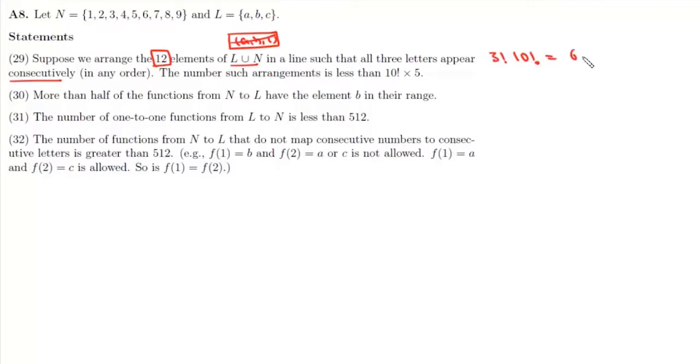So total number of such arrangements will be 6 × 10!, which is greater than 5 × 10!. That means statement 29 is incorrect.